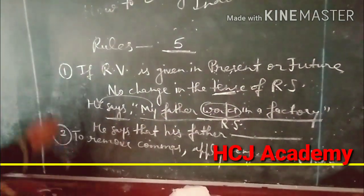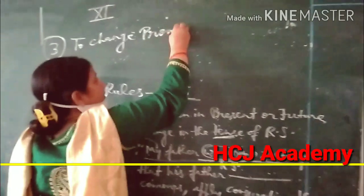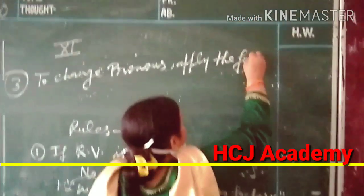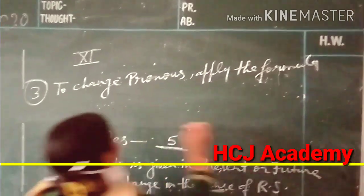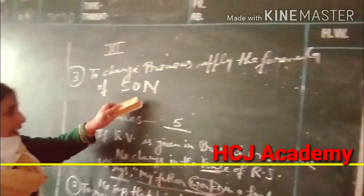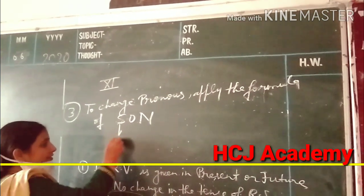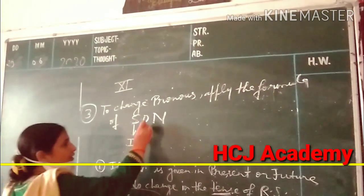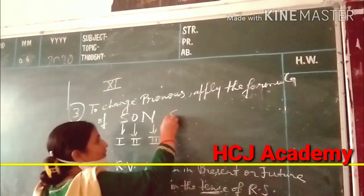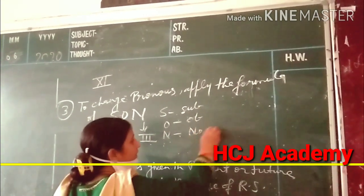Third rule: to change pronouns. To change pronouns, apply the formula of S-O-N. S stands for subject, O stands for object, and N stands for no change. S corresponds to first person, O corresponds to second person, and N corresponds to third person.